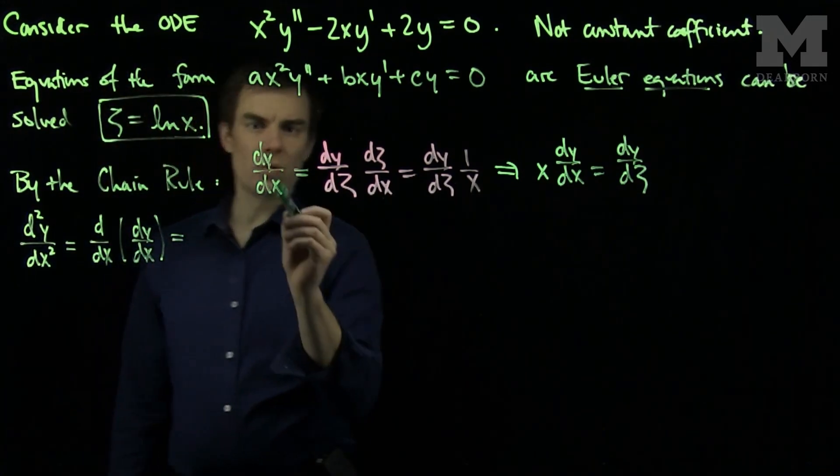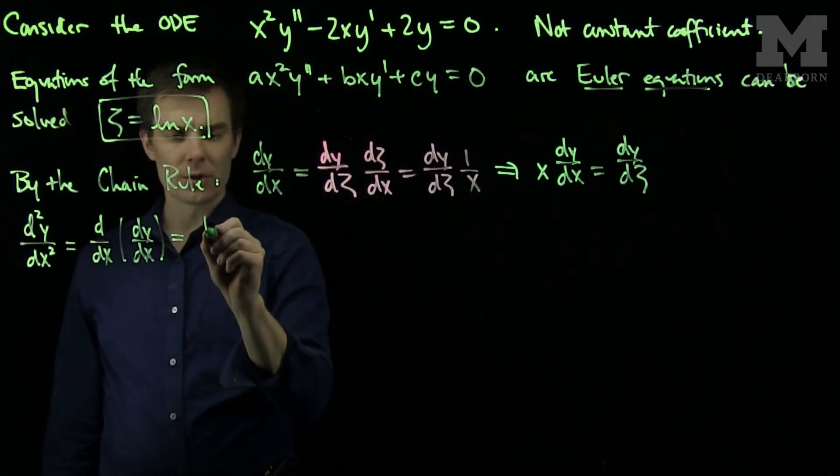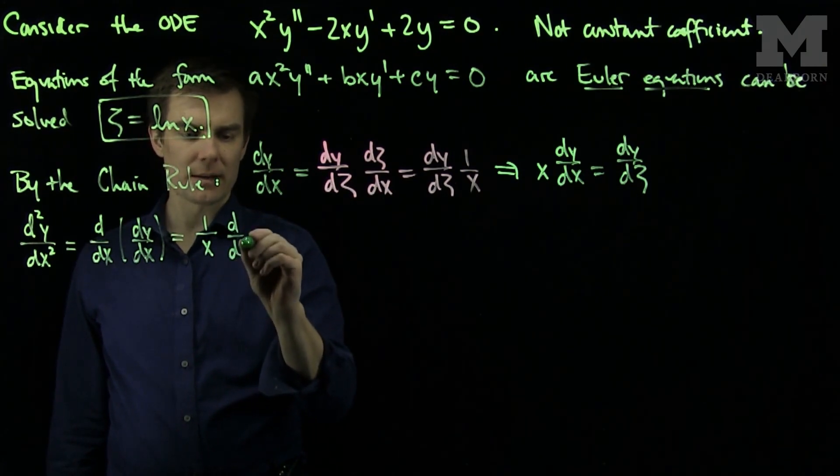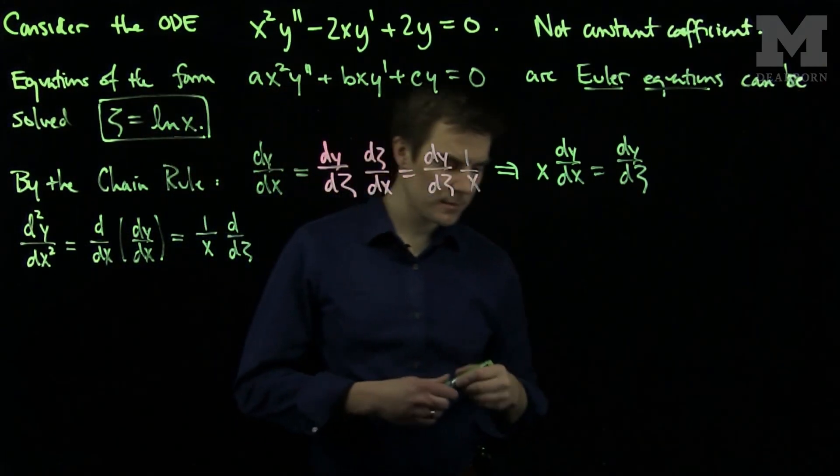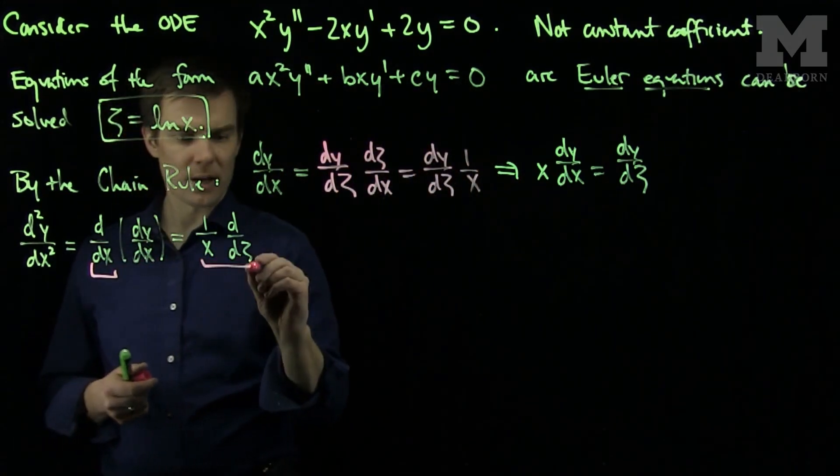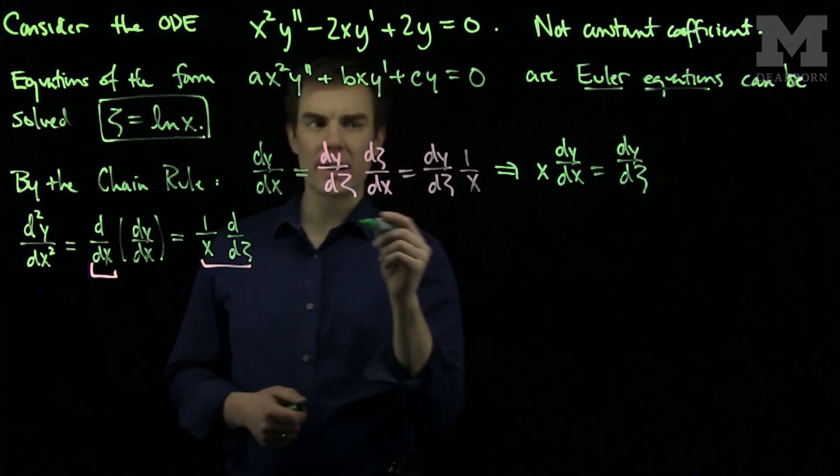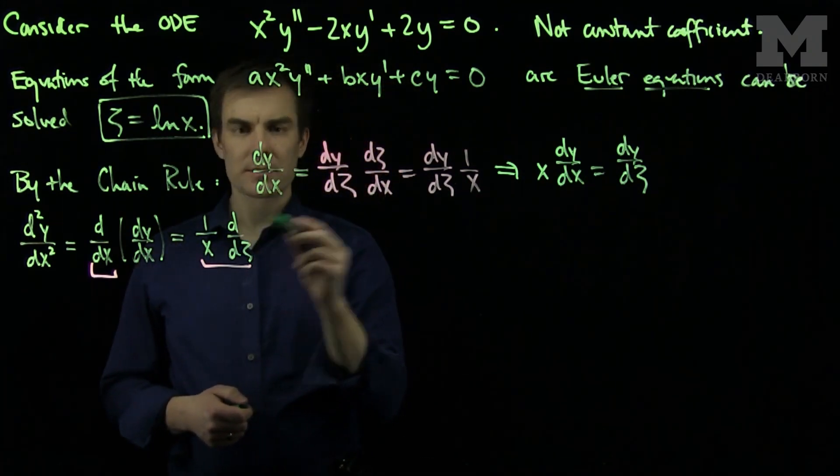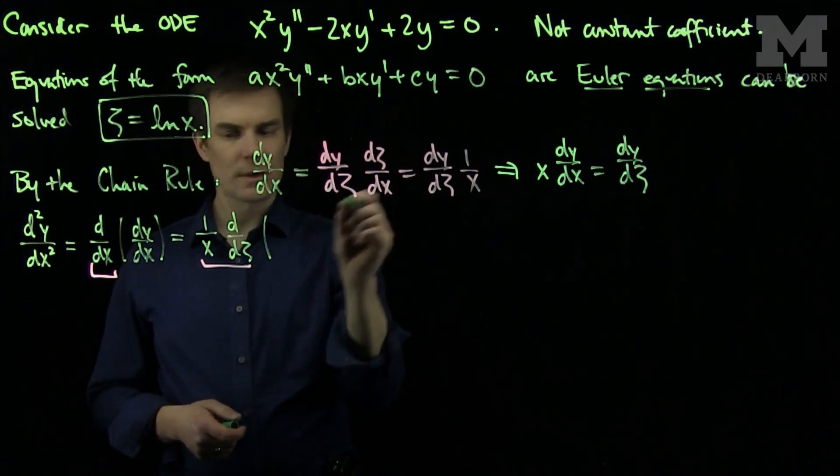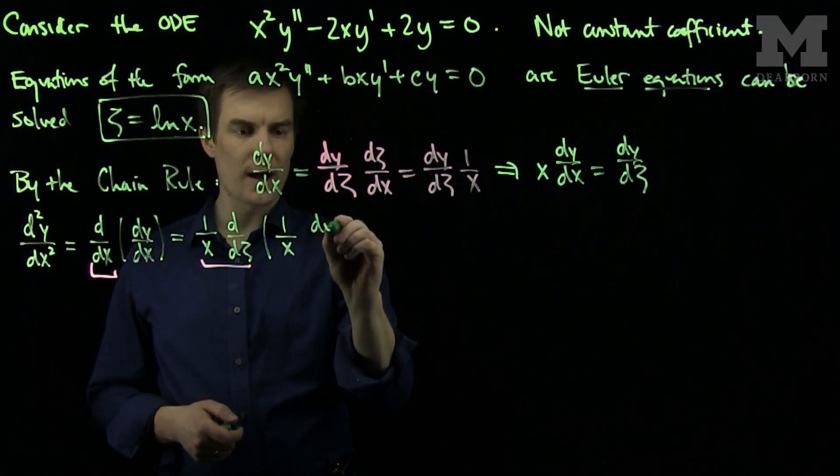We know that to do an x derivative is equivalent to multiplying by 1 over x and doing a zeta derivative. So the d by dx can be replaced with a 1 over x d by d zeta. So this differential operator can be written like so. And then dy dx, we know what dy dx is. We know that dy dx times x is going to be dy d zeta. So dy dx is going to be 1 over x dy d zeta.